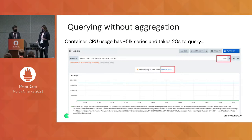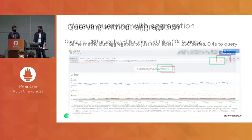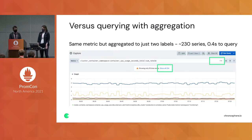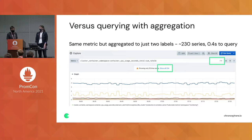In most cases, you don't typically need to look at all your pod-level metrics. You probably just want the aggregate-level view. So in this example, we're aggregating on just two labels — container name and namespace. By doing this aggregation before the query, you're able to cut down the render time quite a bit. Now it only takes less than a second, because you've cut it down to about 230 time series.